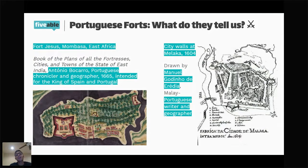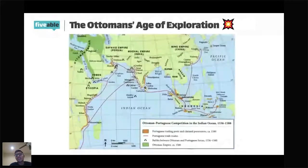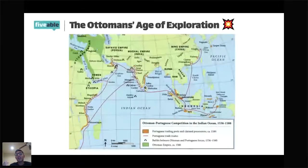Let's talk about gunpowder empires to dabble in the age of exploration — specifically the Ottoman-Portuguese competition in the Indian Ocean. The Ottomans are a land-based gunpowder empire, while the Portuguese are a maritime empire. The Portuguese had many more maritime trading posts and coastal cities to facilitate the dispersion of their realm. The Ottomans were more secluded on their landmass. The Ottomans did have a good navy and did some trading post activity, but the Portuguese were much more involved.